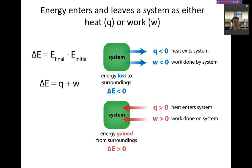So if we talk about energy being lost to the surroundings, that means our total internal energy is going to be less than zero. And that could be in the form of heat, where heat is exiting the system or work is being done by the system. And if we're talking about energy being gained from the surroundings, then that could be heat entering the system or work being done on the system.